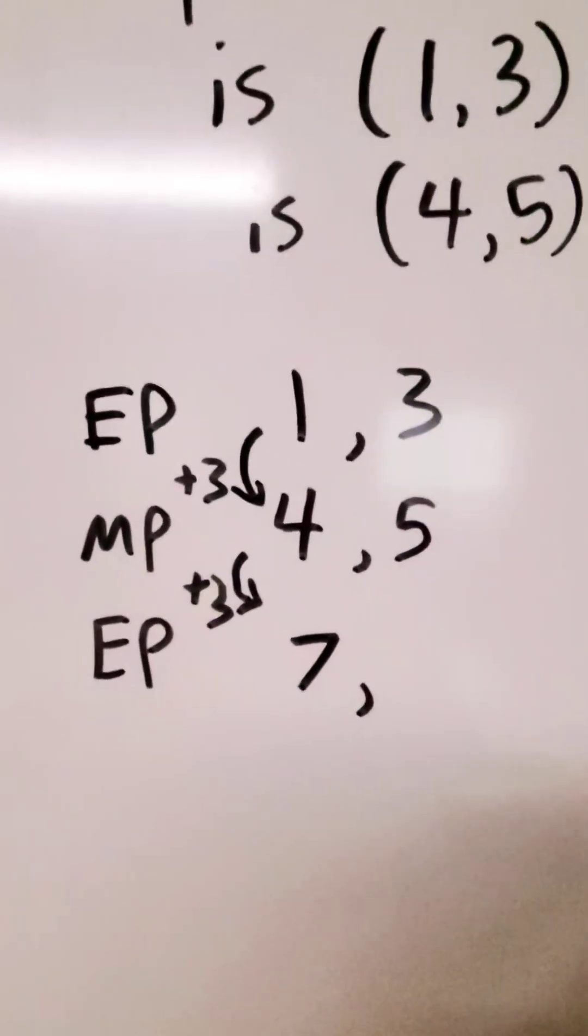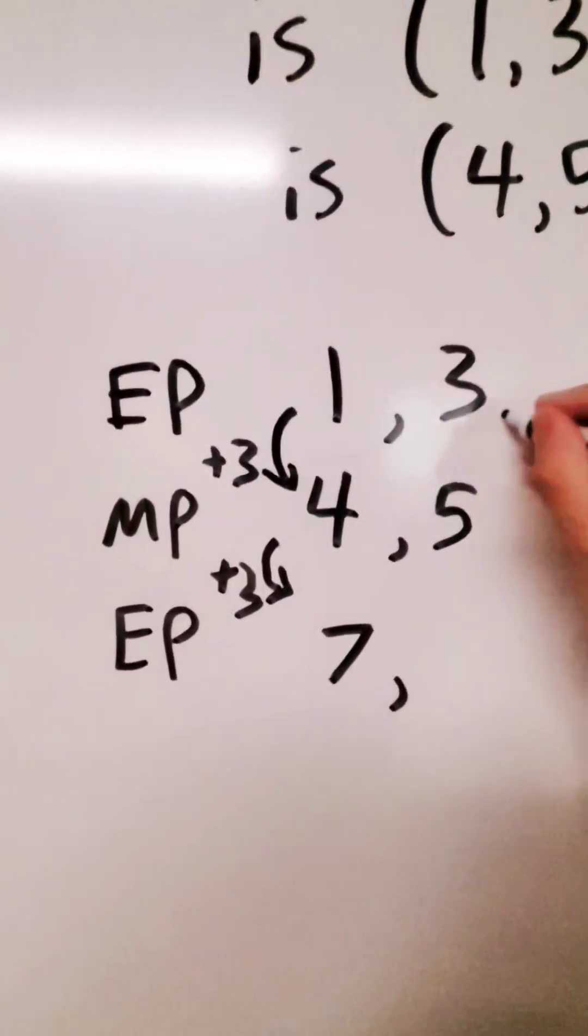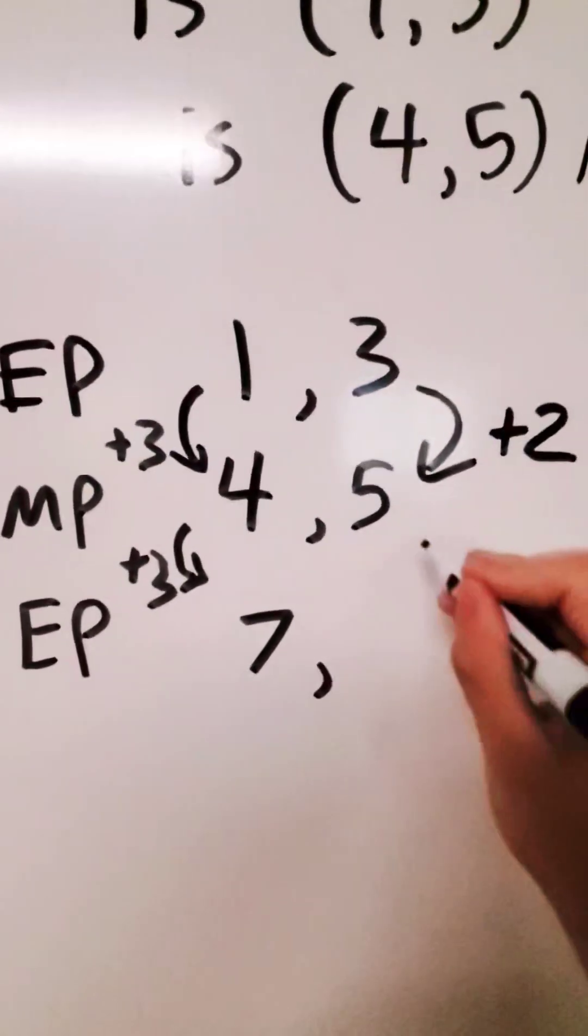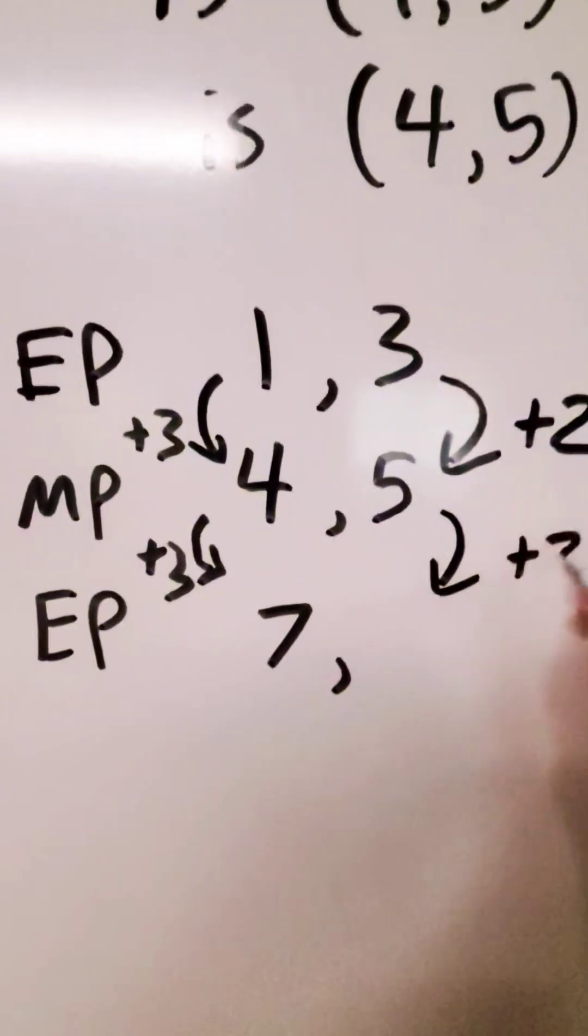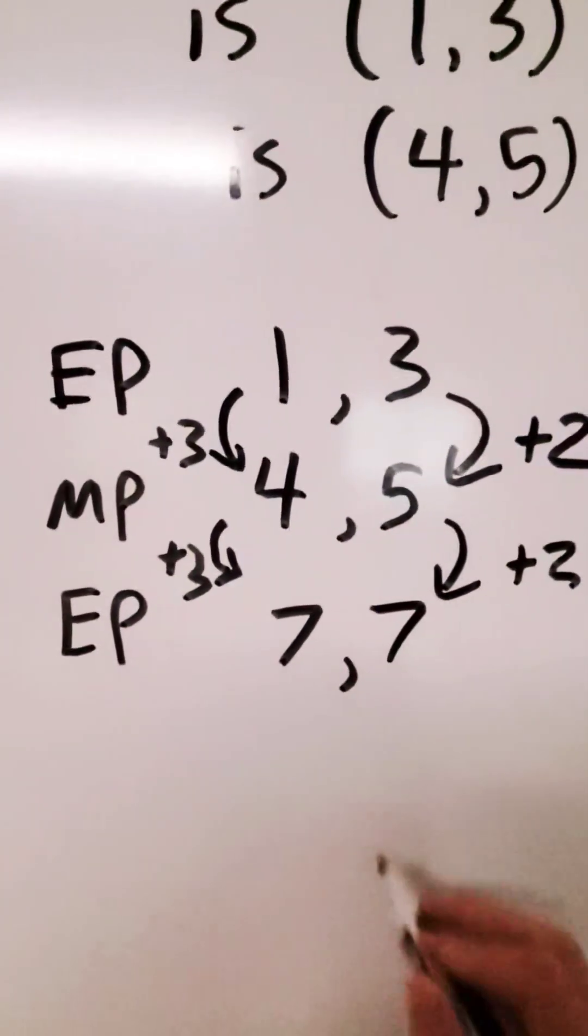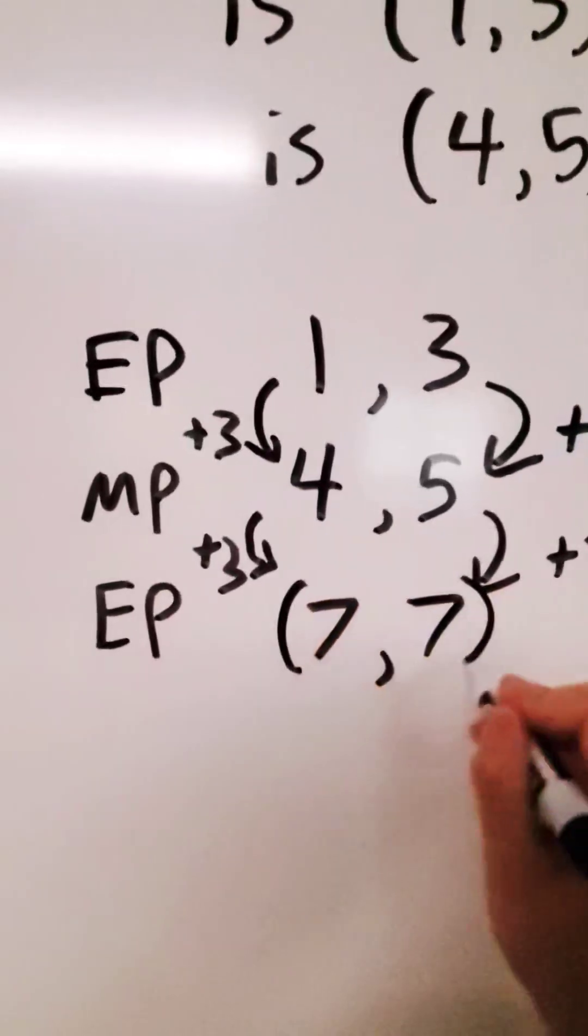Going from 3 to 5, what do you have to do? What would you have to add or subtract? In this case, it is going to be 2. And we are going to do it one more time. And our other value would be 7. So our endpoint here would be 7, 7.